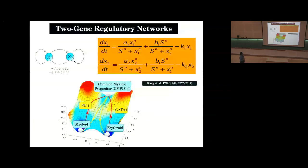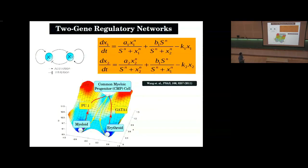Now we wanted something more realistic — a two-gene network. This two-gene motif is very common and occurs in real biological systems. You have two transcription factors X1 and X2: X1 upregulates its own production, X2 upregulates its own production, but they mutually inhibit each other. There is a positive feedback from X1 and a negative feedback from X2. This motif occurs in the common myeloid progenitor cell that divides into myeloid and erythroid lineages: if PU1 dominates, you go myeloid; if GATA1 dominates, you go erythroid. This work was done by Wang in 2011, who constructed a landscape via the Fokker-Planck equation — solving it gives a steady-state probability, and taking minus log of that gives the landscape.